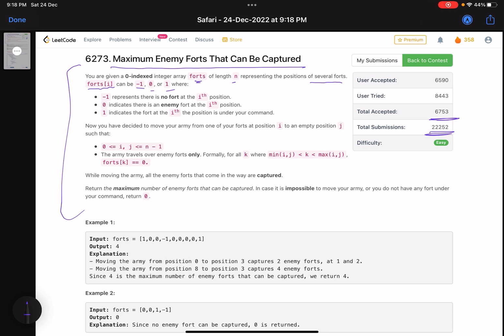-1 represents that there is no fort at the i-th position. 0 indicates that there is an enemy fort at the i-th position, and 1 indicates that the fort at the i-th position is under my command. So 1 is mine, this is the enemy, this is empty. Simple.